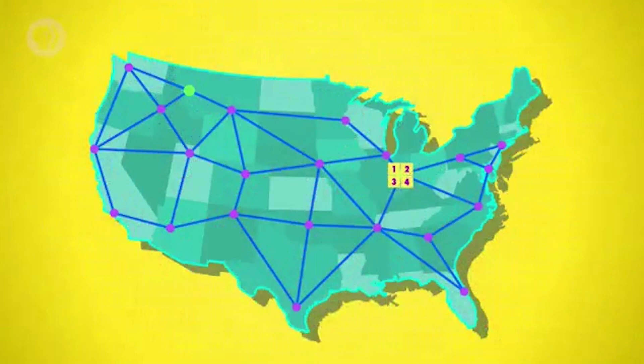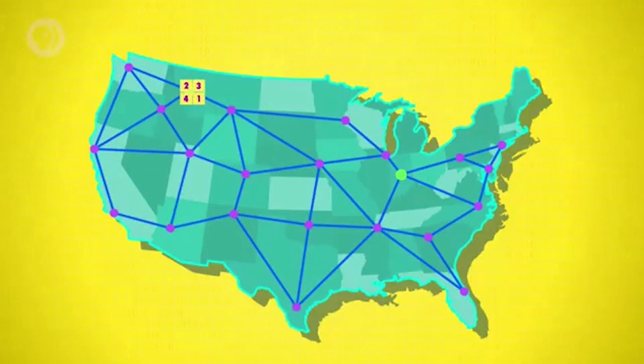With millions of computers online all exchanging data, bottlenecks can appear and disappear in milliseconds. Network routers are constantly trying to balance the load across whatever routes they know to ensure speedy and reliable delivery, which is called congestion control. Sometimes different packets from the same message take different routes through a network, opening the possibility of packets arriving at their destination out of order, which is a problem for some applications.